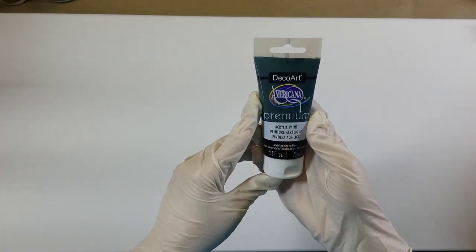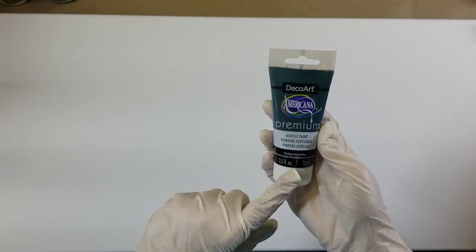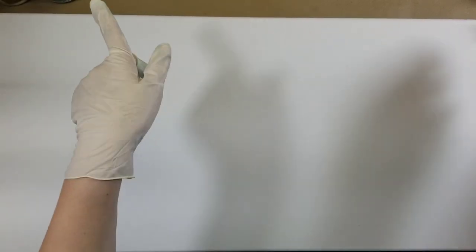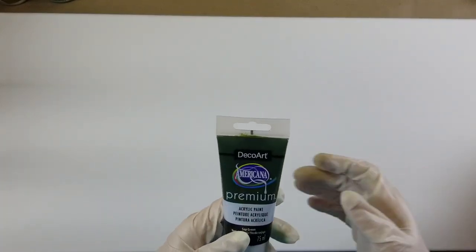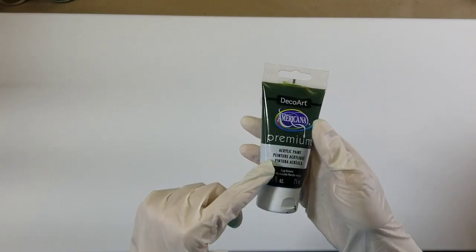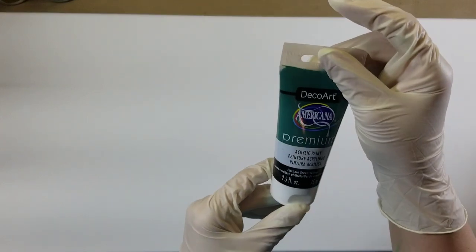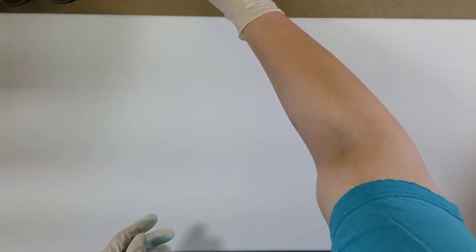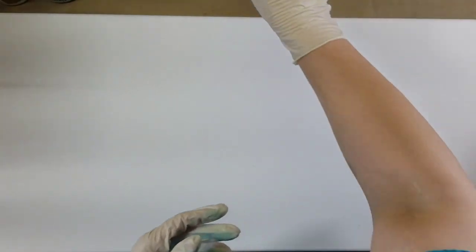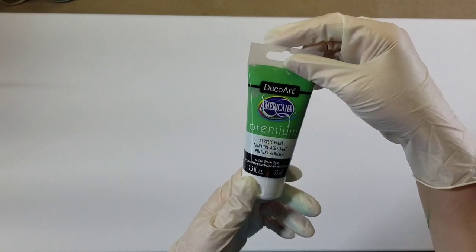This is the Decor Americana Premium Acrylic Paint in Viridian Green Hue. I got these on clearance at Michael's. This is Sap Green, Phthalo Green Yellow, Phthalo Green Blue, and Yellow Green Light.